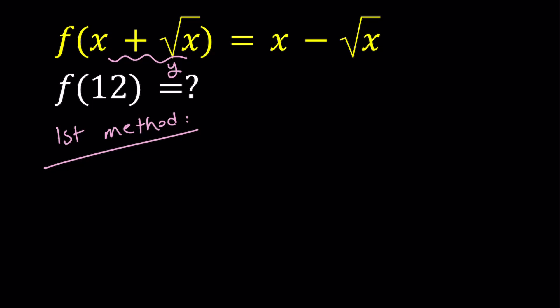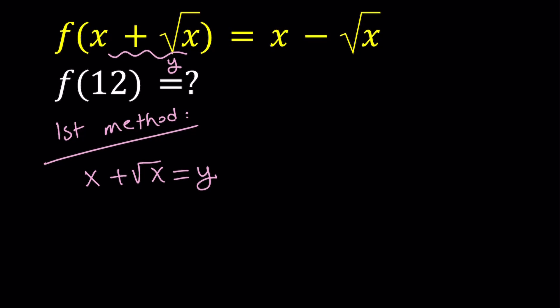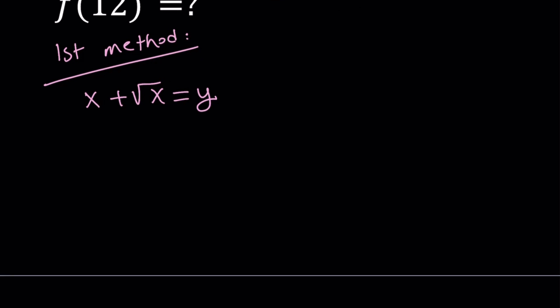We're going to try to find out how x can be expressed in terms of y. Our assumption basically means that x + √x = y. From here we get the following for √x, which is important because we want this to be well defined. So √x can be written as y − x.